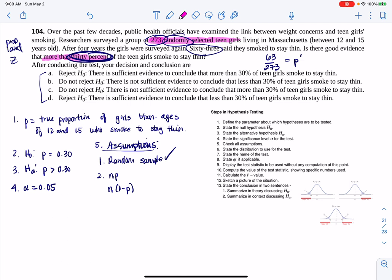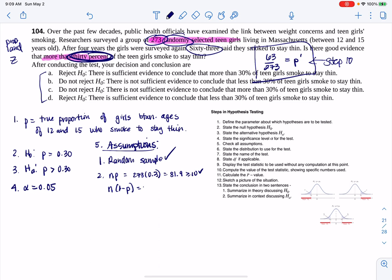We're going to build our sampling distribution around the fact that the null is true, meaning I'm going to use this proportion in my assumptions of 30%. Whatever your statistic is, whether you're in mean land or proportion land, this will not show up until step 10. I had a sample size of 273, multiply that against 30%, and I'm going to get 81.9. That is greater than or equal to 10. Then I'm going to do its complement, and when I crunch that number, I'm going to get 191.1, which is also greater than or equal to 10.